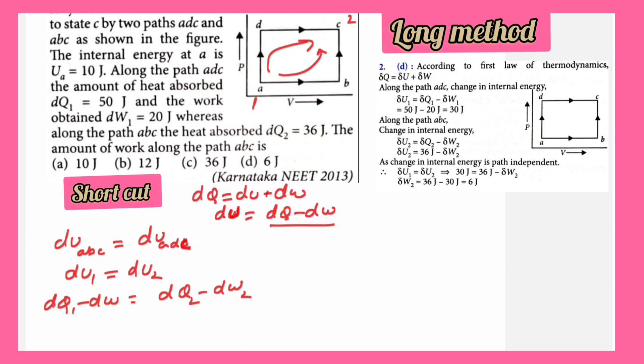This is a shortcut method to solve the problem. If you remember this formula when internal energies are same, you can solve the problem very easily. Now just substitute the values here. dQ1 is given and dW1 is given, dQ2 is also given.